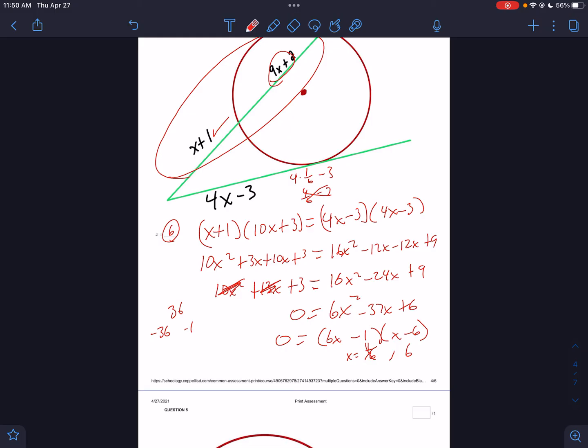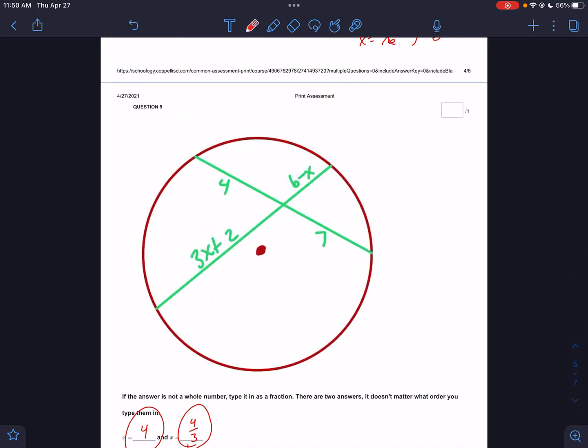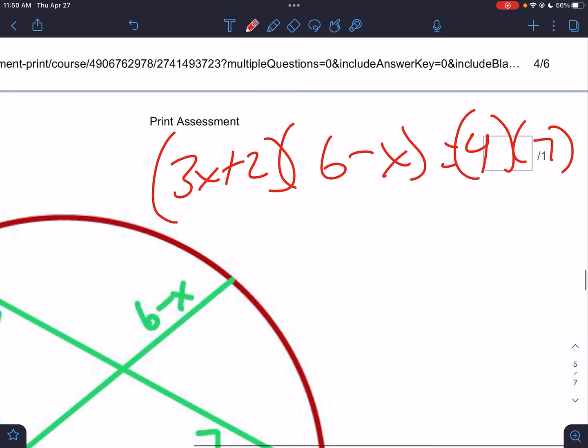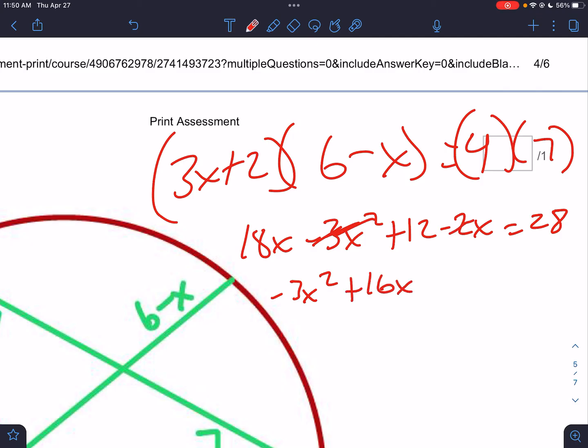We have two chords: part times part. That would be (3x + 2) times (6 - x) equals part times part, 4 times 7. We distribute: that would be 18x - 3x² + 12 - 2x = 28. Clean that up: it's going to be -3x² + 16x + 12 = 28. So -3x² + 16x - 16 = 0.